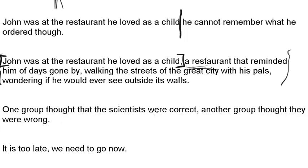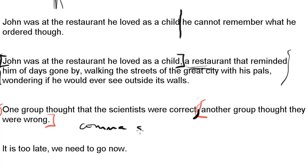'One group thought that the scientists were correct. Another group thought they were wrong.' So we've got two independent clauses. We don't have a run-on because we've got a comma here. So is that good enough? Well, no. Even though we have the comma, we need more. You cannot separate two independent clauses with just a comma. This is called a comma splice.